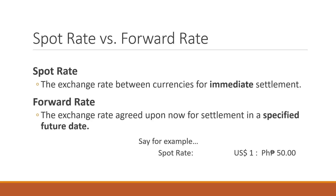For example, the spot rate is 1 US dollar equals 50 pesos. We might have a 30-day forward rate of 1 US dollar equal to 50.79 pesos. You have to understand that the spot rate and the forward rate may vary — they are not necessarily the same.